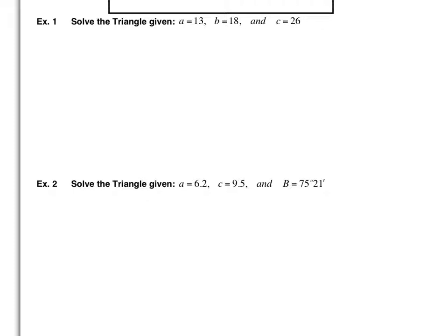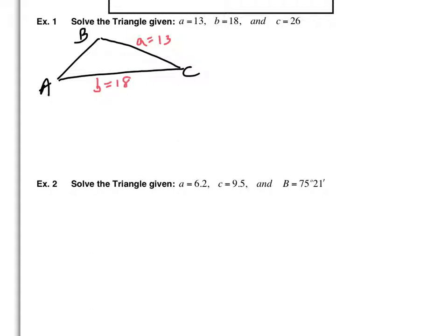Let's go ahead and sketch the triangle they gave us. They've given me three sides: side A is 13, side B is 18, and side C is 26. I have no angle, so I cannot use Law of Sines — I need to use Law of Cosines. I need to decide: do I want to find angle A, B, or C first? It is always best to start with the longest side and find the largest angle first.